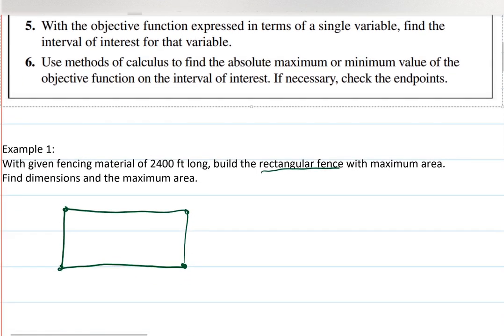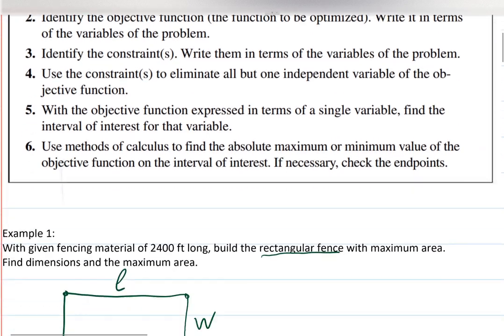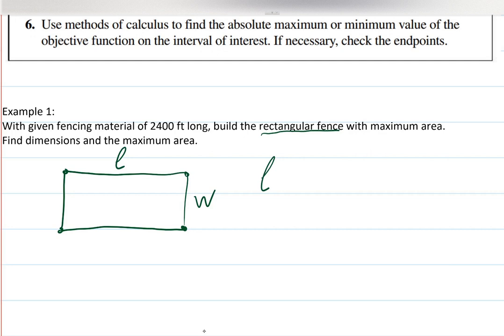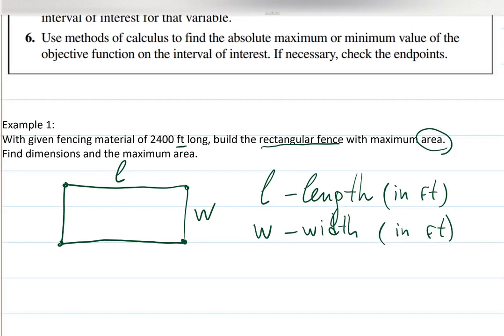They recommend identifying variables and organizing them on the picture. Rectangles have lengths, which I'll call L, and widths, which I'll call W — you can call them x and y if you prefer. L will be my length in feet, and W will be my width in feet. They also mention area, so I'll write that down too.